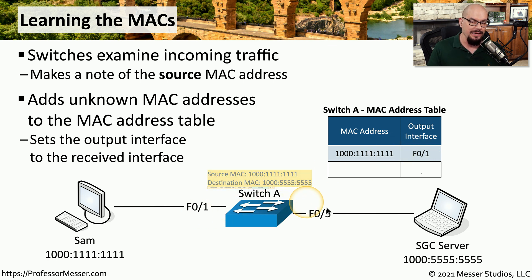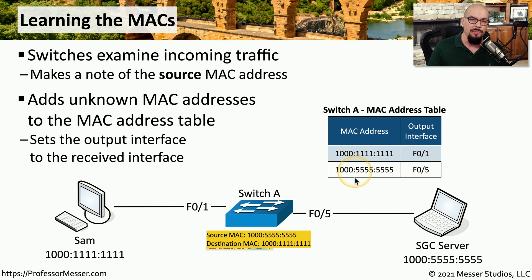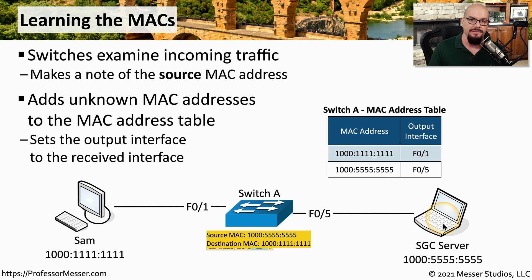That information is then sent on to the SGC server. When the SGC server responds to that communication, it has a different source MAC address and the process is repeated. In this case, the switch identifies that MAC address as coming from FastEthernet 0/5.